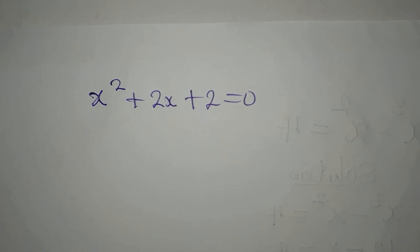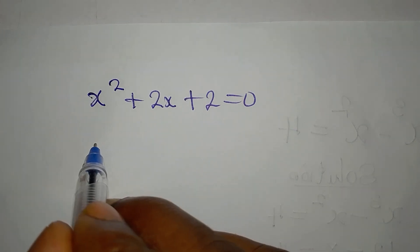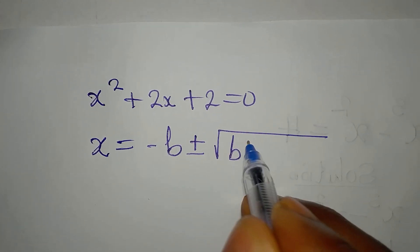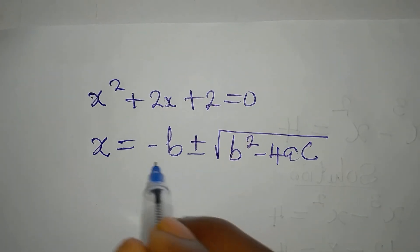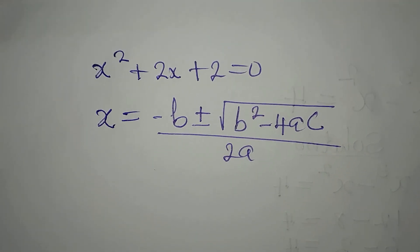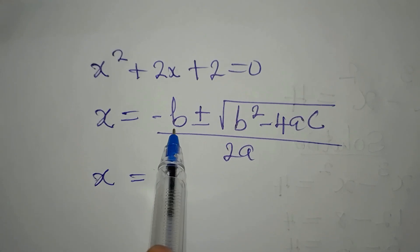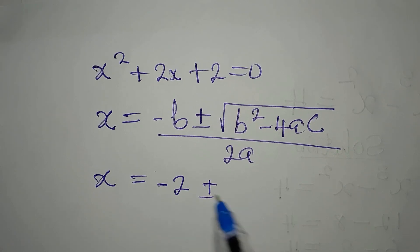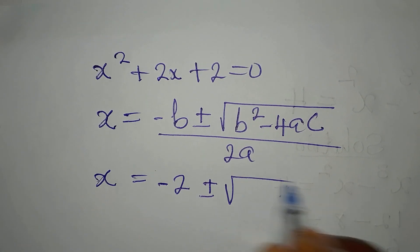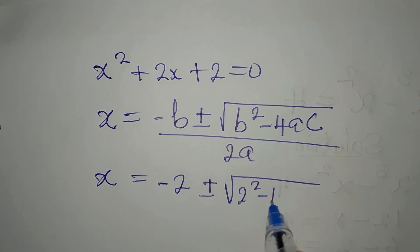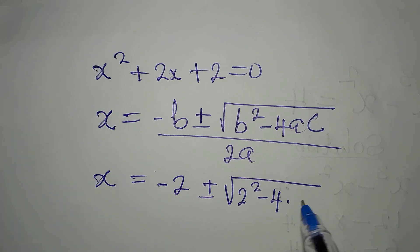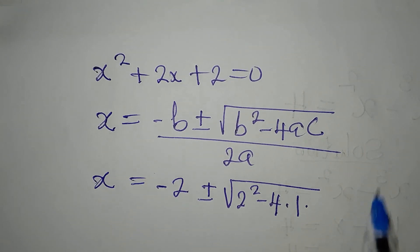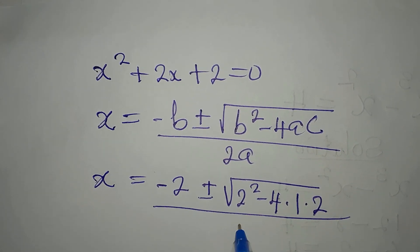We will use the quadratic formula: x equals negative b plus or minus the square root of b² minus 4ac, all over 2a. In our equation, b is 1, a is 1, and c is 2. So x equals negative 1 plus or minus the square root of 1 squared minus 4 times 1 times 2, divided by 2 times 1.